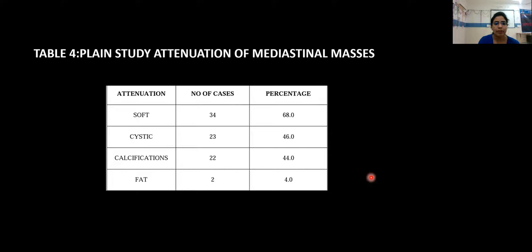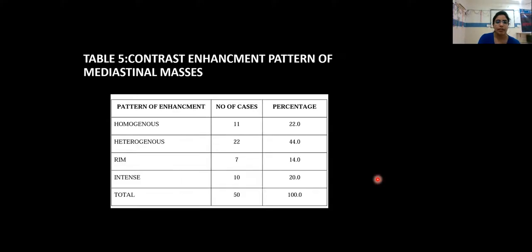The plain study attenuation table shows soft tissue attenuation in 34 cases, cystic attenuation in 23 cases, calcifications in 22 cases, and fat in 22 cases. The contrast enhancement pattern table shows homogeneous enhancement in 11 cases, heterogeneous enhancement in 22 cases, rim enhancement in 7 cases, and intense enhancement in 10 cases.